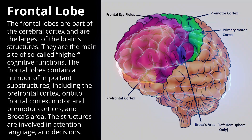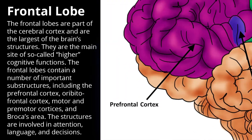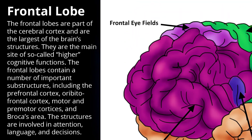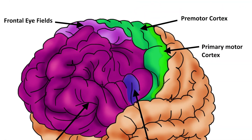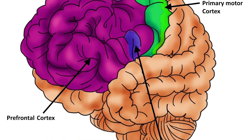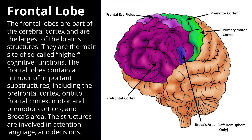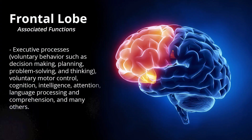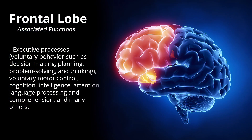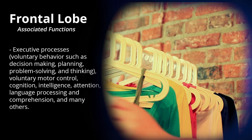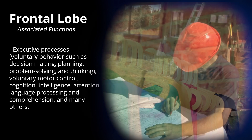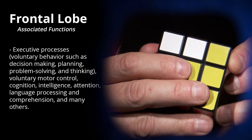These substructures include the prefrontal cortex, frontal eye fields, motor and premotor cortices, and Broca's area. The structures are involved in attention, language, and decisions. Functions associated with the frontal lobe include executive processes, voluntary behavior such as decision-making, planning, problem-solving, and thinking.